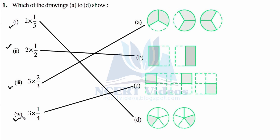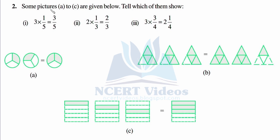Question number two: some pictures A to C are given below — tell which of them show the matching fraction. Same thing we have to do as in the previous question. First is three times one over five. This cannot be the answer because it is two times only. One is shaded out of five — this repeats three times, so we can connect it.